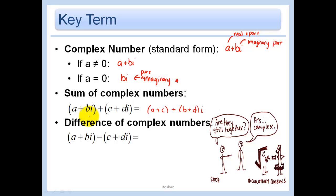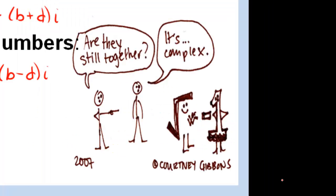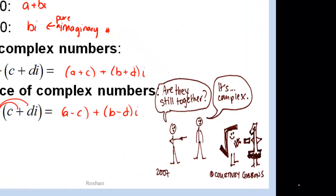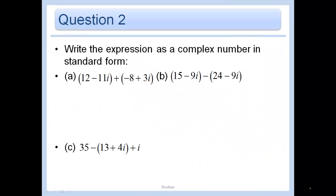The difference of complex numbers, same deal here. We have to remember to distribute this negative sign, though. And so we would get a minus c as the real number part, and then we would get plus b minus d as the imaginary part. So here's a great little comic on this one. Write the expression as a complex number in standard form. So this is just using what we just did in that last one. So you would just add up the real number part. So 12 minus 8 is 4.